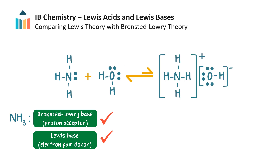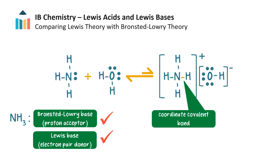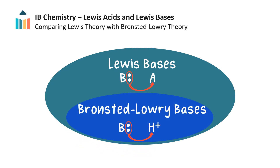Let's write out the equation as Lewis structures properly. This bond here is the new coordinate covalent bond formed. In fact, all Bronsted-Lowry bases are always also Lewis bases, because they possess a pair of electrons to donate.